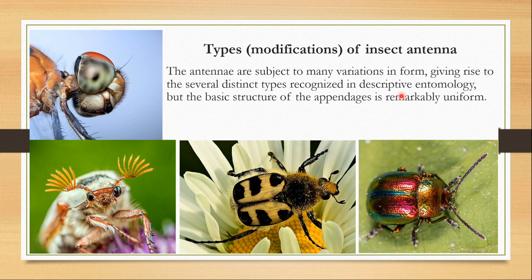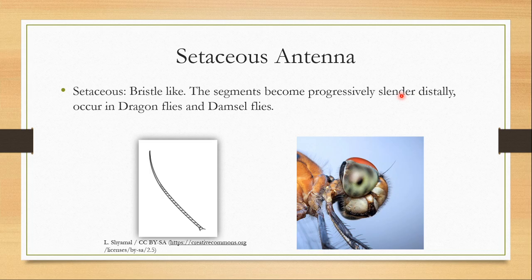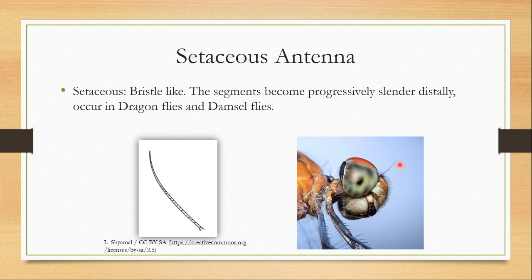The first type is the setaceous or bristle-like antennae, where the segments become progressively slender distally. They occur in dragonflies and damselflies. These setaceous or bristle-like antennae are really small and minute — you would not even see them if you are not looking at the head carefully. But if you look carefully you would definitely see this bristle-like antennae on the head of dragonflies and damselflies, that is in order Odonata.